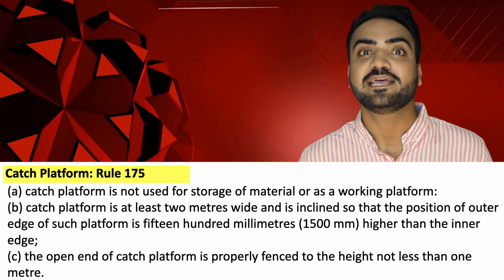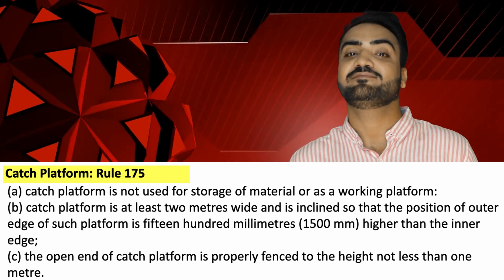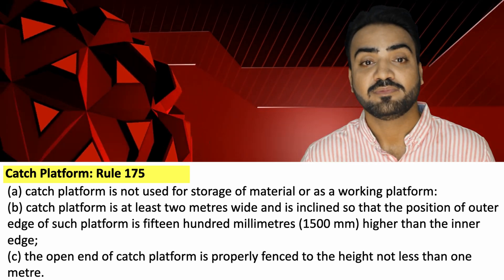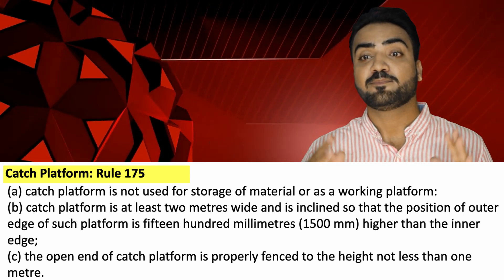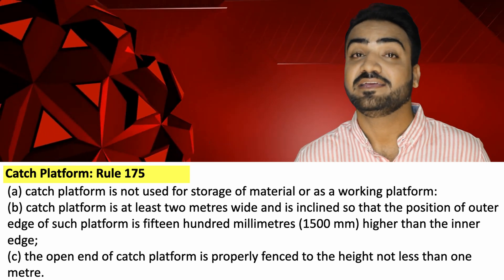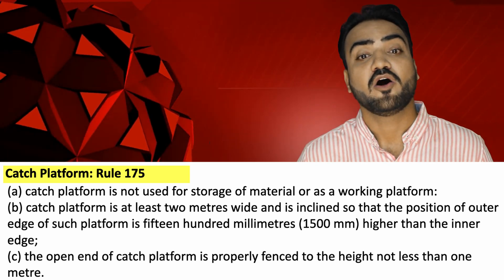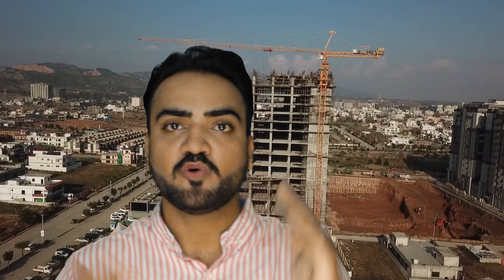BOCW Rule 175 talks about cage platform requirements in building construction. The cage platform is not used for storage of material or as a working platform. It must be at least 2 meters wide and inclined so that the outer edge is 1,500 mm higher than the inner edge. The open end of the cage platform must be properly fenced to a height of not less than 1 meter.